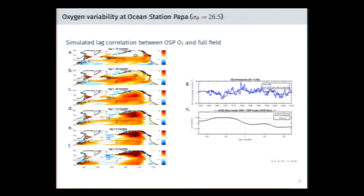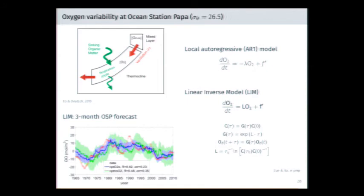Basically, anomalies are generated in the subarctic North Pacific and transported by the gyre flow, such that if you're trying to predict oxygen downstream you can use the oxygen four years ago upstream as a metric. You can do this more generally through a linear inverse model — a matrix that encapsulates the dynamics of the system built on covariance matrices. The prediction at Ocean Station Papa using different varieties of the LIM framework to predict oxygen variability shows somewhat promising results.